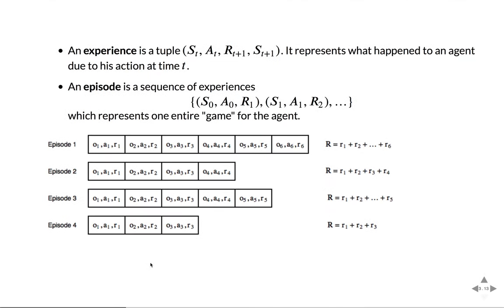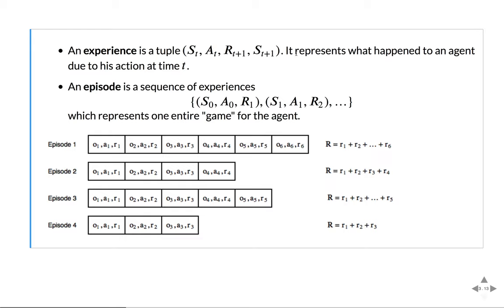The last thing to remind you of is what experiences and episodes are. An experience is a tuple of a current state, the current action performed in that state, the immediate reward incurred by that action in that state, and the state that was transitioned into. As the agent acts in the environment, he creates these tuples continuously. An episode is a sequence of these experiences — sequential experiences the agent had until game over. So our episode will be some observation, action, reward, then the second observation, second action, second reward, and so on, composed of multiple experiences. The reward for the entire episode is just the accumulated reward.